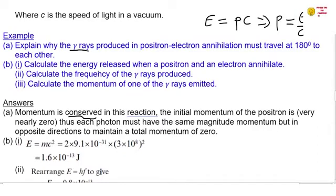For the second one, calculate the energy released when a positron and an electron annihilate. And from the Einstein's mass energy equation, E = mc². So we can say that two times, because we're going to form a positron and an electron, they've got the same mass. So we're going to say 2 × 9.1 × 10⁻³¹ × c², which is going to be that. So that's the total energy that's going to be produced. 1.6 × 10⁻¹³ joules.